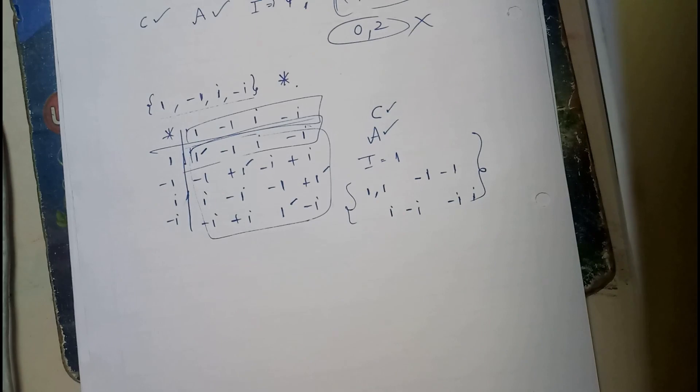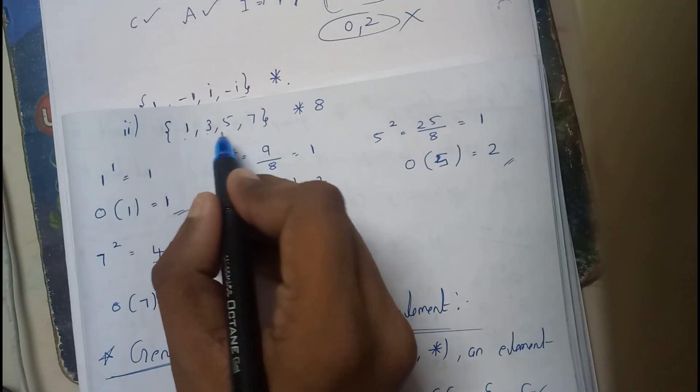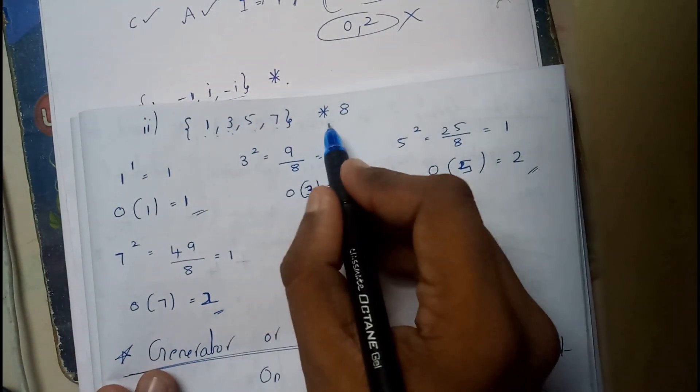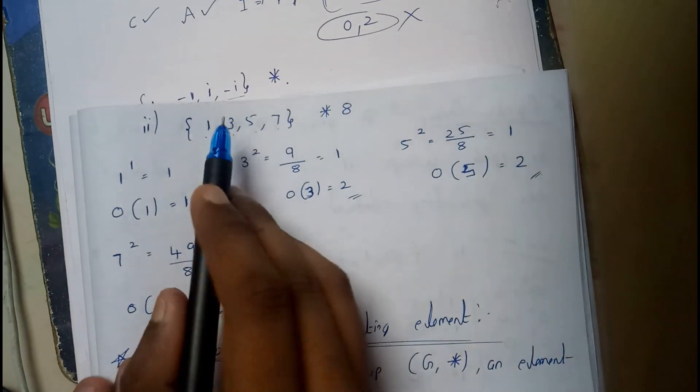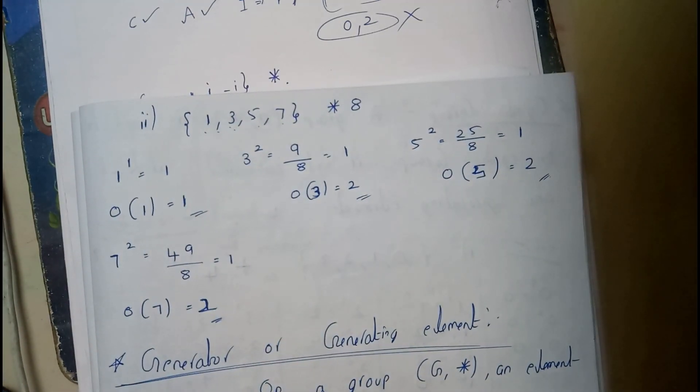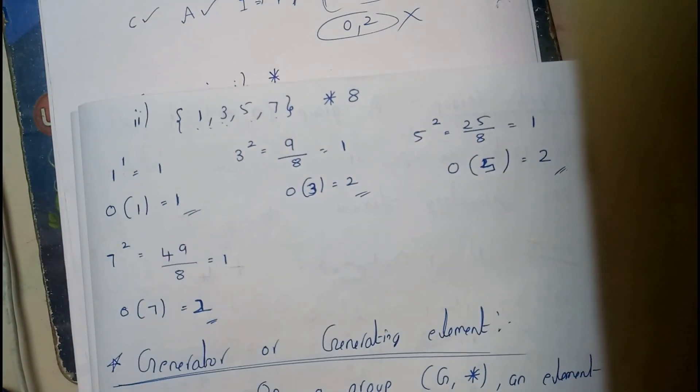Next example: the set contains elements {1, 3, 5, 7} with operation *_8 (multiplication mod 8). Let's take examples: 1^1 is always 1, so order is 1. For 3, 3^1 is 3 mod 8 equals 3.